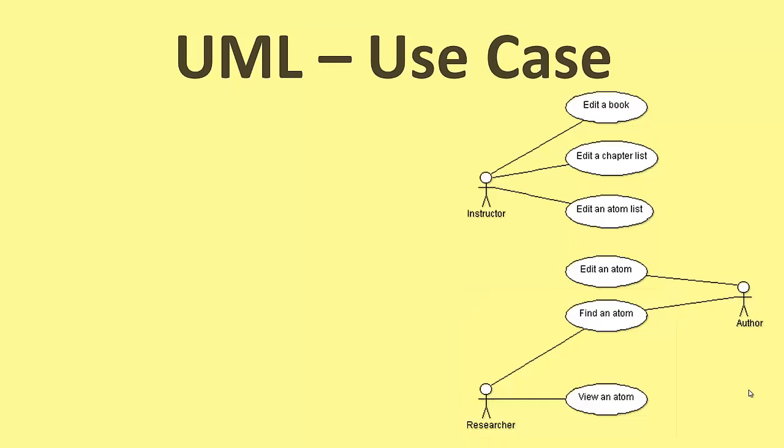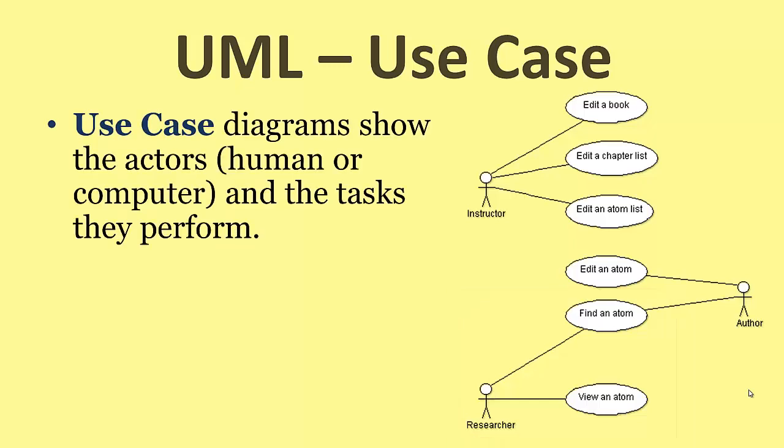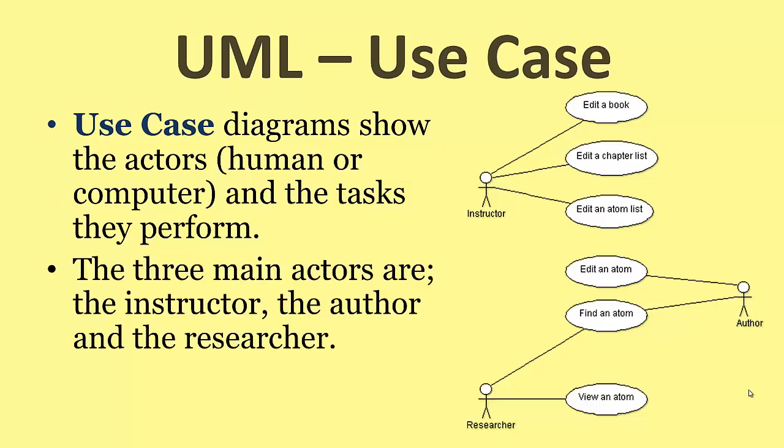So that's the overview. A use case diagram shows the actors, human or computer actors, and the tasks that they want to perform with your program. The three main actors in our case are the instructor, the author, and the researcher.